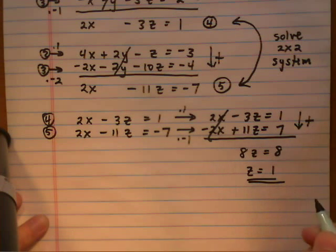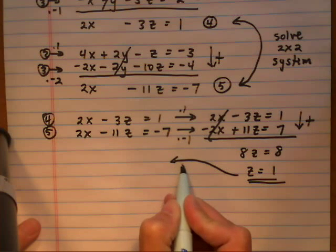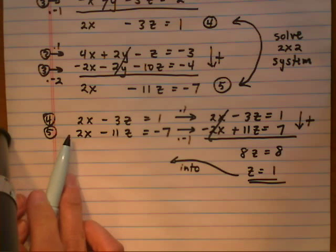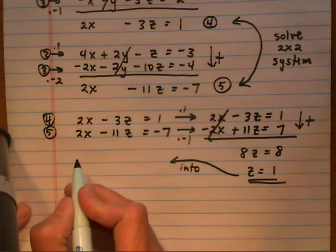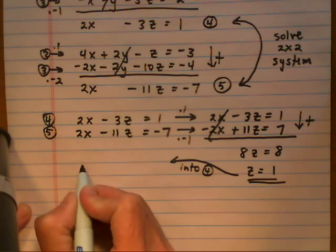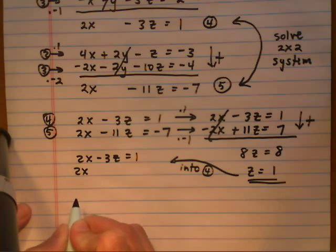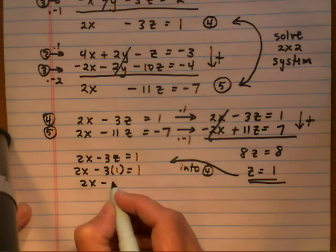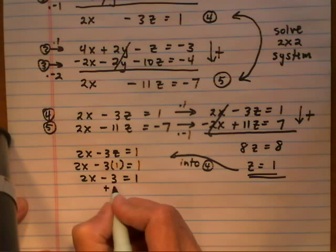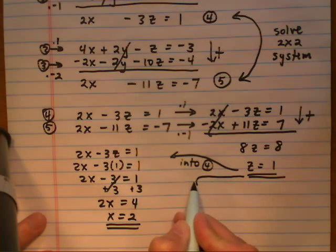z = 1, so we're almost there. We back substitute into equation 4, which is 2x − 3z = 1. Substituting z = 1 gives 2x − 3(1) = 1, so 2x − 3 = 1. Adding 3 to both sides: 2x = 4, so x = 2.